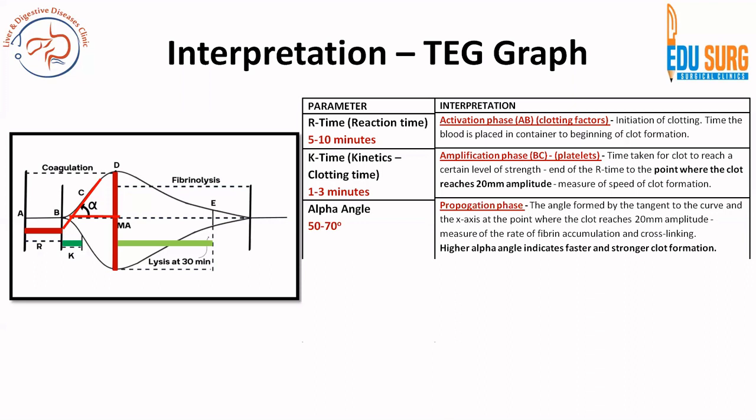The alpha angle is the angle formed by a tangent to the curve and the axis at the point where the clot reaches 20 mm amplitude. At the point where K time has started and ended — that is the 20 mm amplitude — a tangent to the curve and its intersection forms the alpha angle, which is normally 50 to 70 degrees. This is known as the propagation phase and is basically a measure of the rate of fibrin accumulation and cross-linking. A higher alpha angle indicates faster and stronger clot formation.